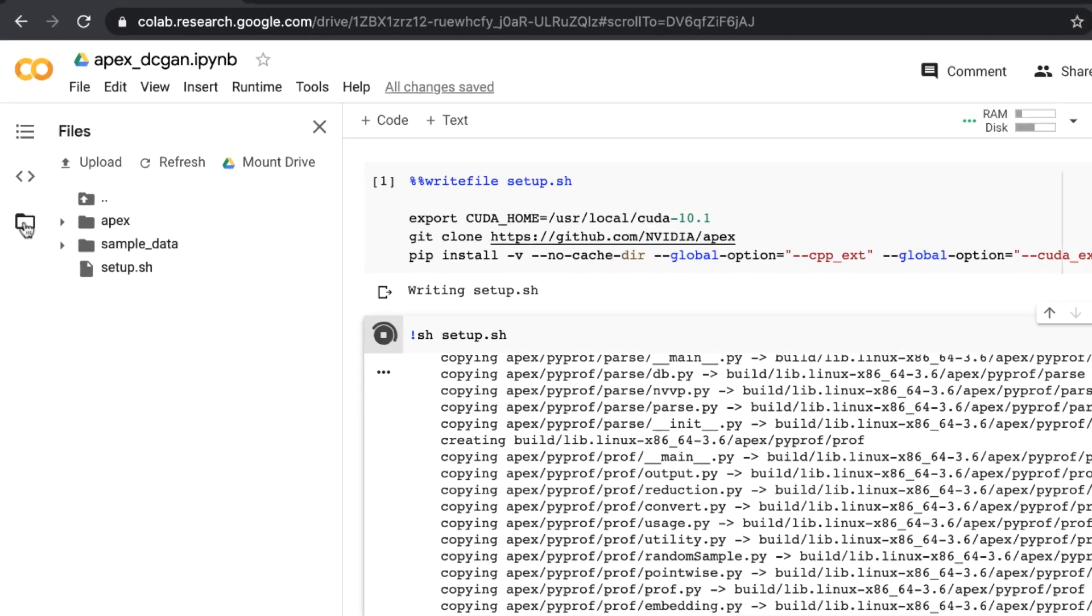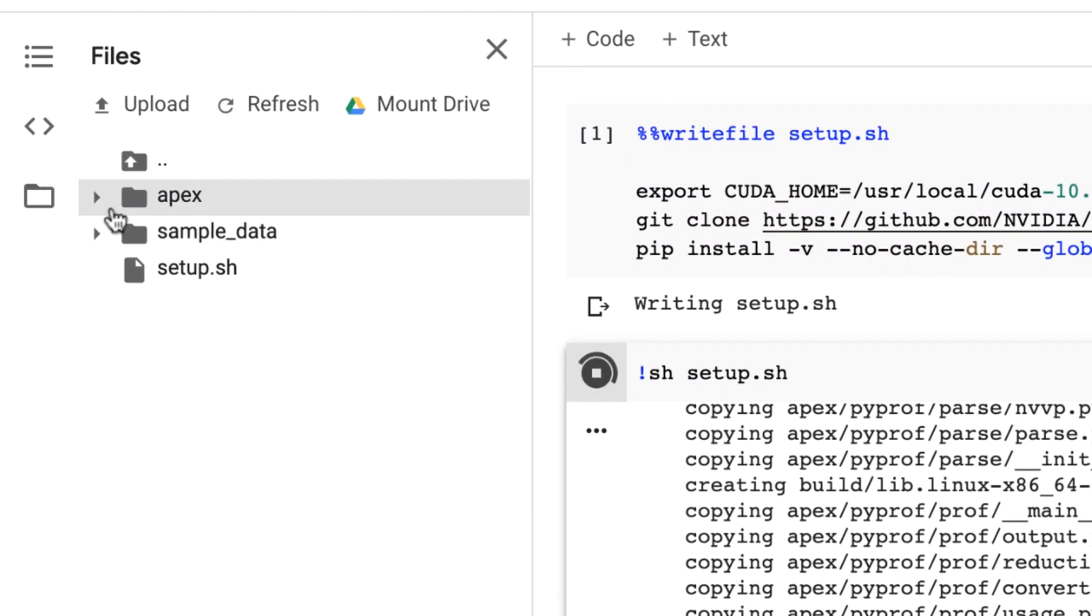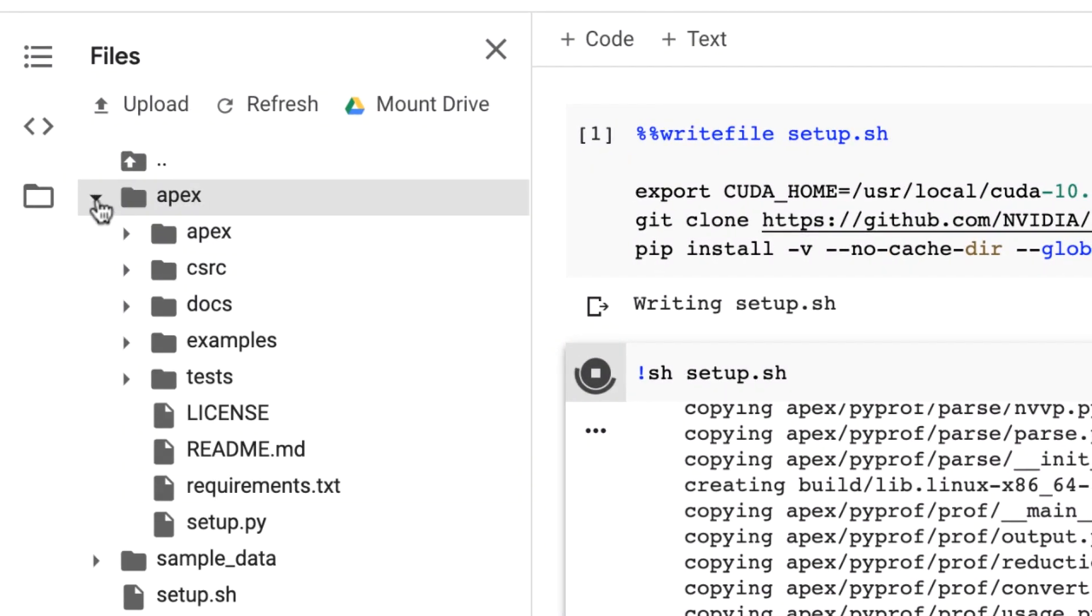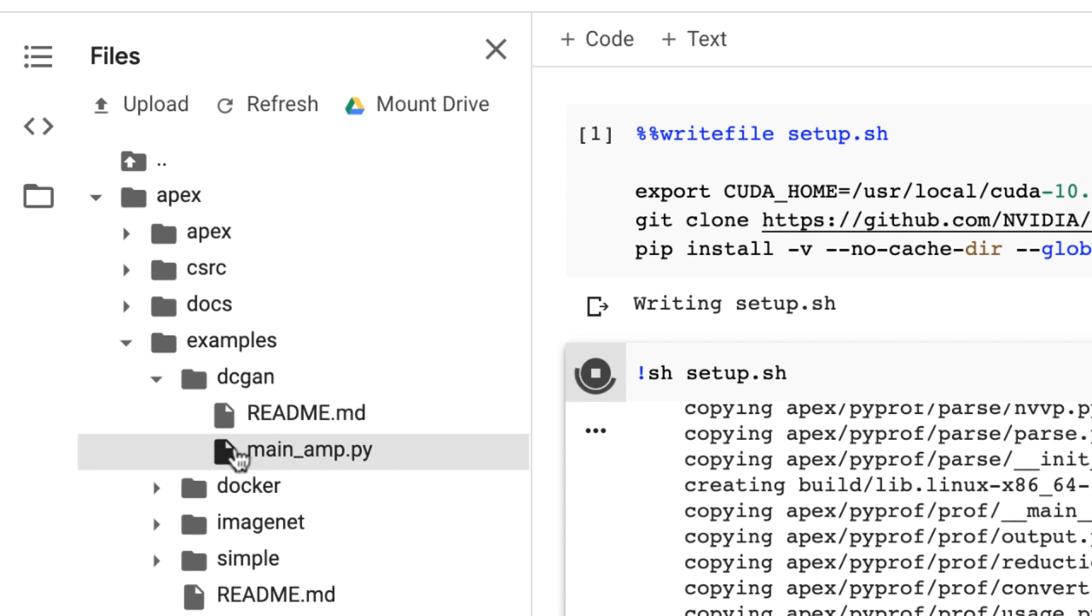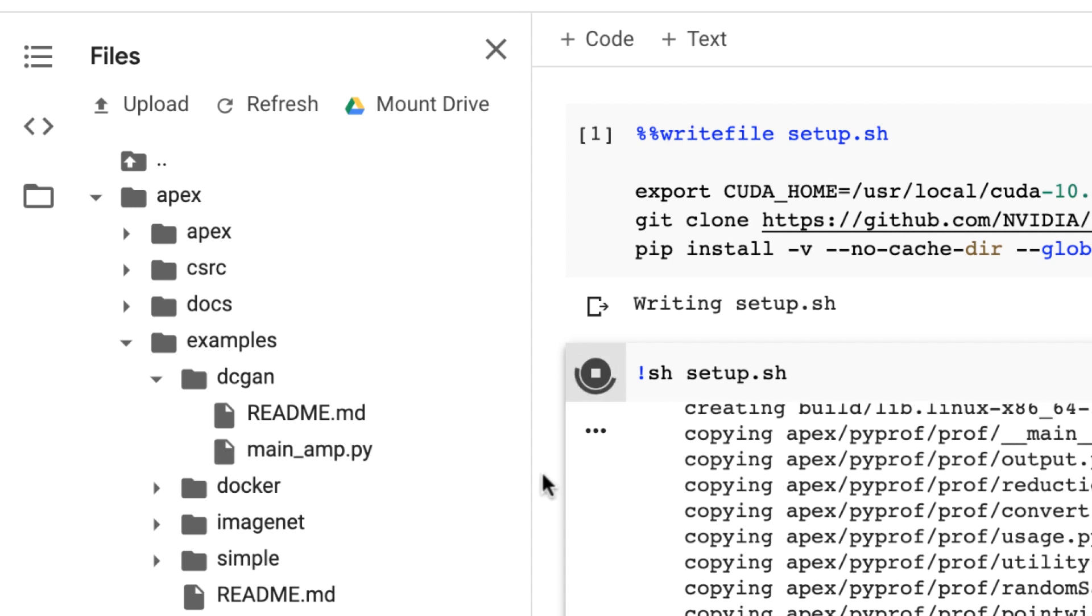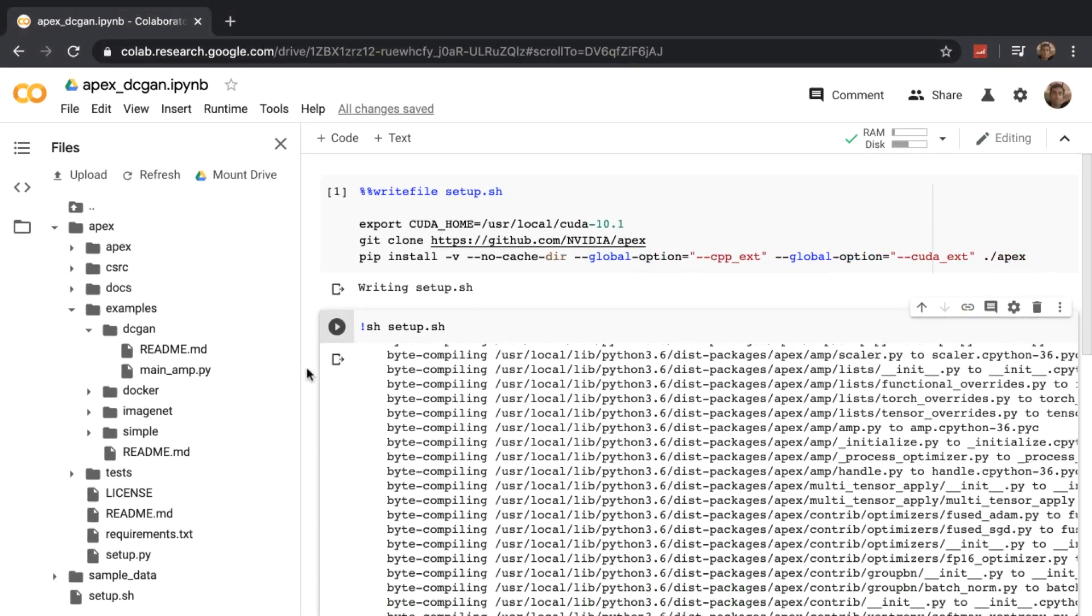On the sidebar, let's go to files to get an idea of the file system that we're dealing with. Let's go to Apex, Examples, DCGAN, and main_amp.py. This file has the code for the deep convolutional GAN with the mixed precision modeling that we discussed.